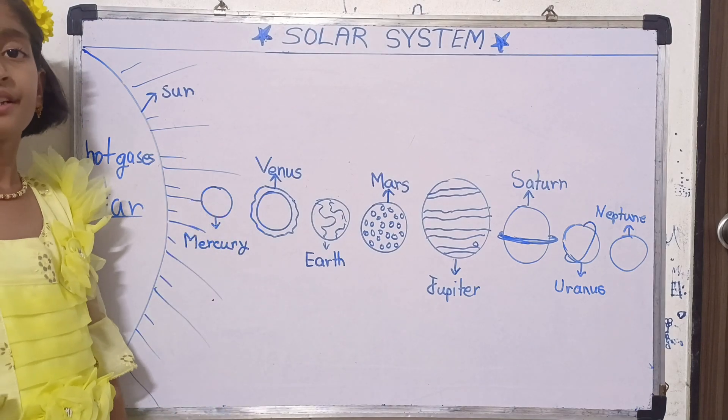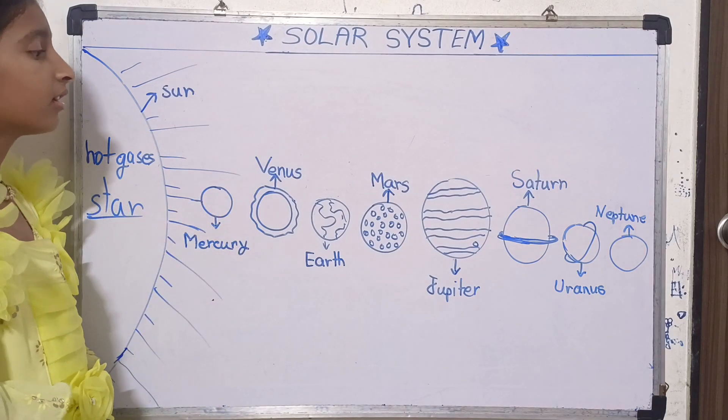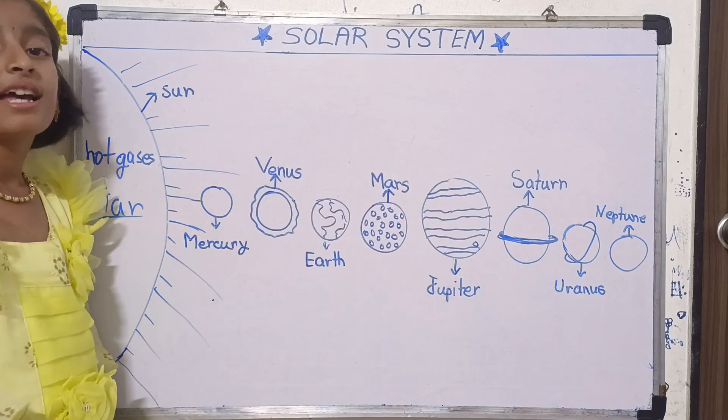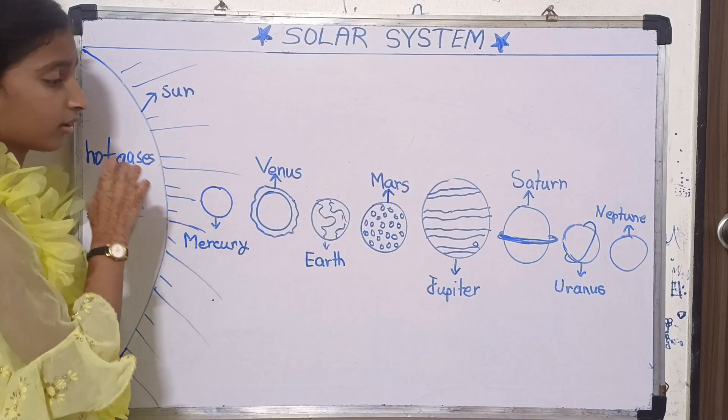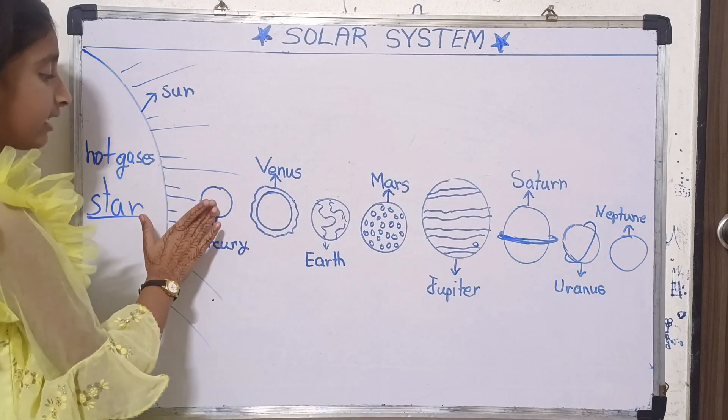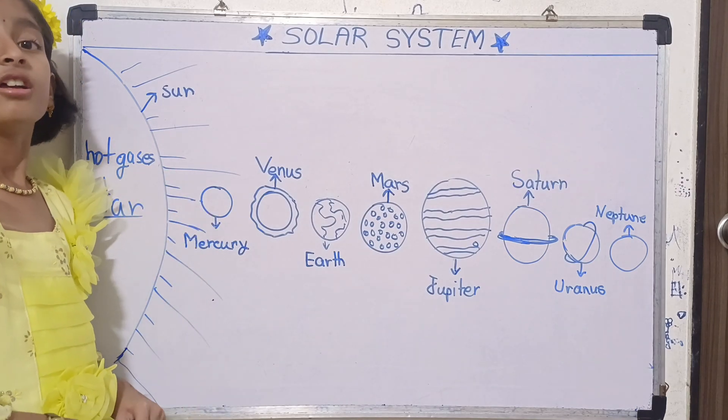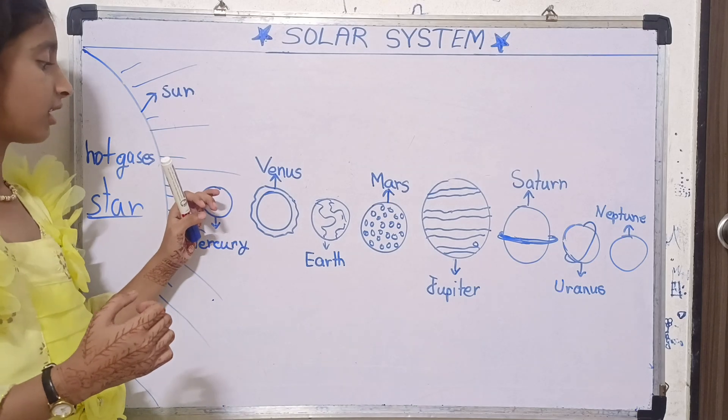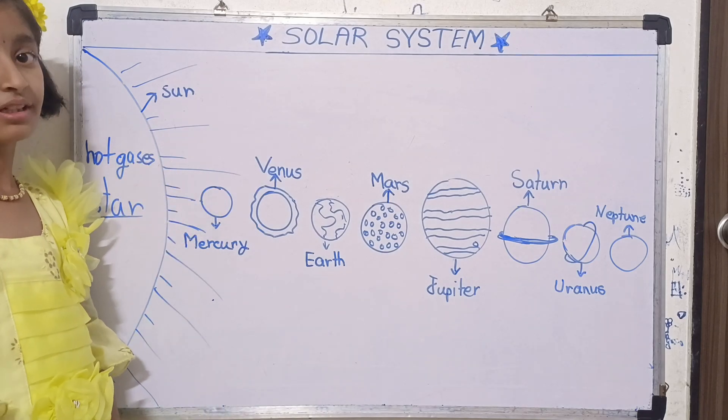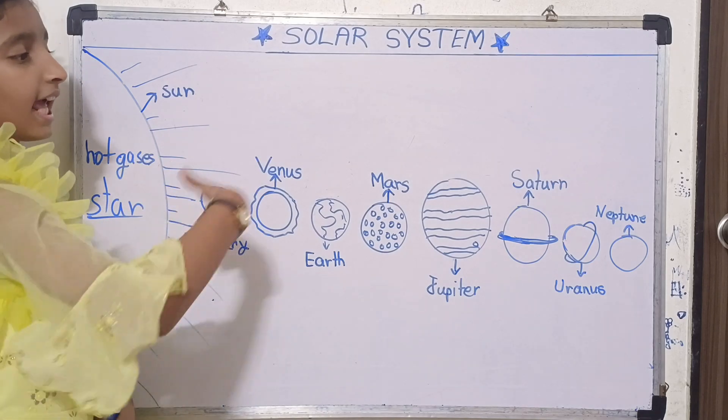Mercury. Mercury is the smallest planet in our solar system and Mercury is closest to the Sun. At daytime, Mercury is too hot, and at nighttime it is very cold, like Neptune.